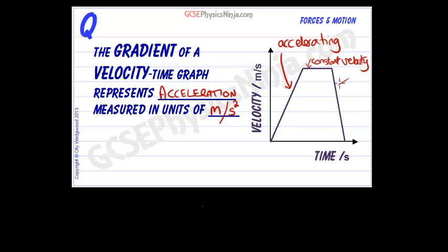And here, this last section as we go down, this means that our velocity is decreasing at quite a fast rate until we end up at zero meters per second. In other words, this is a constant deceleration.